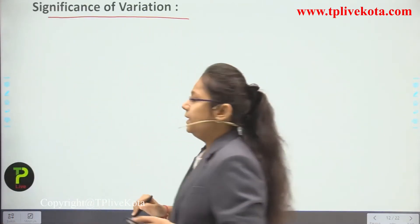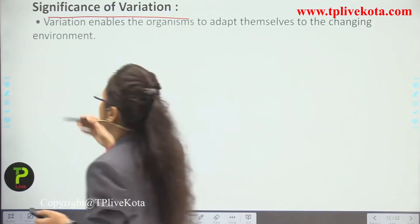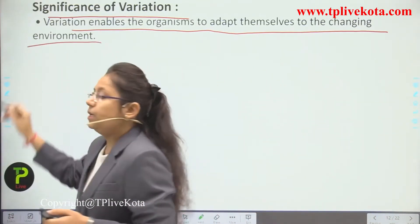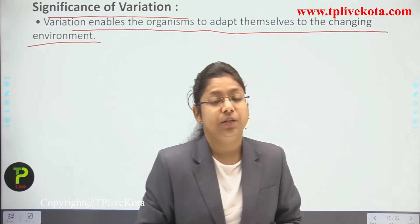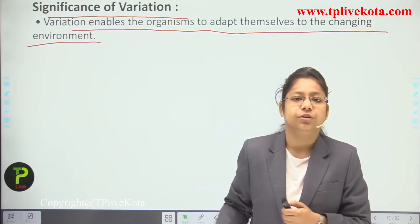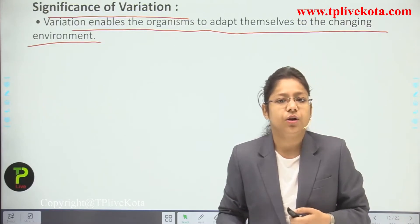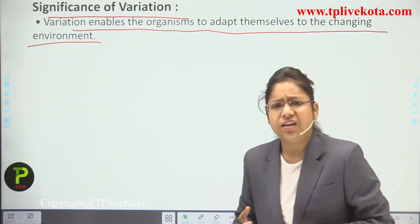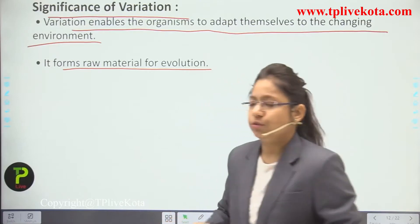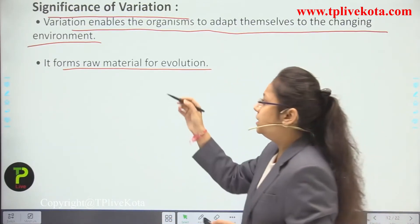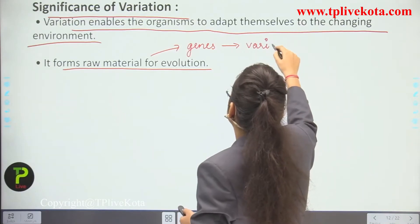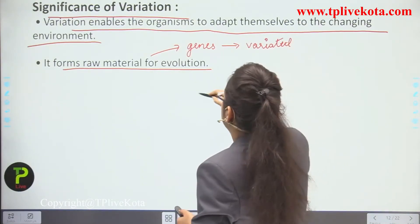The significance of variation: first, variation enables organisms to adapt themselves to the changing environment. If living in a cold country, we adapt by wearing more winter clothes — this is a somatic variation. Second, variation forms the raw material for evolution. As genes get variated, changes in the next generation can be seen — for example, if a person has blue eyes and this gene is transferred to offspring, but the offspring develops black eyes, this variated gene transfers onward.